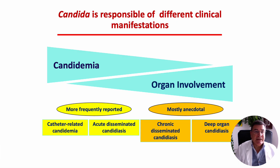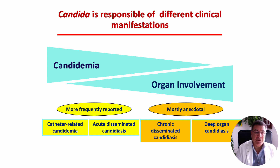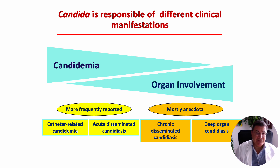As you know, candidemia and bloodstream infections are more frequently reported as the most important clinical manifestations. On the contrary, organ involvement — chronic disseminated candidiasis — is rare and is characterized by the infiltration of deep organs.